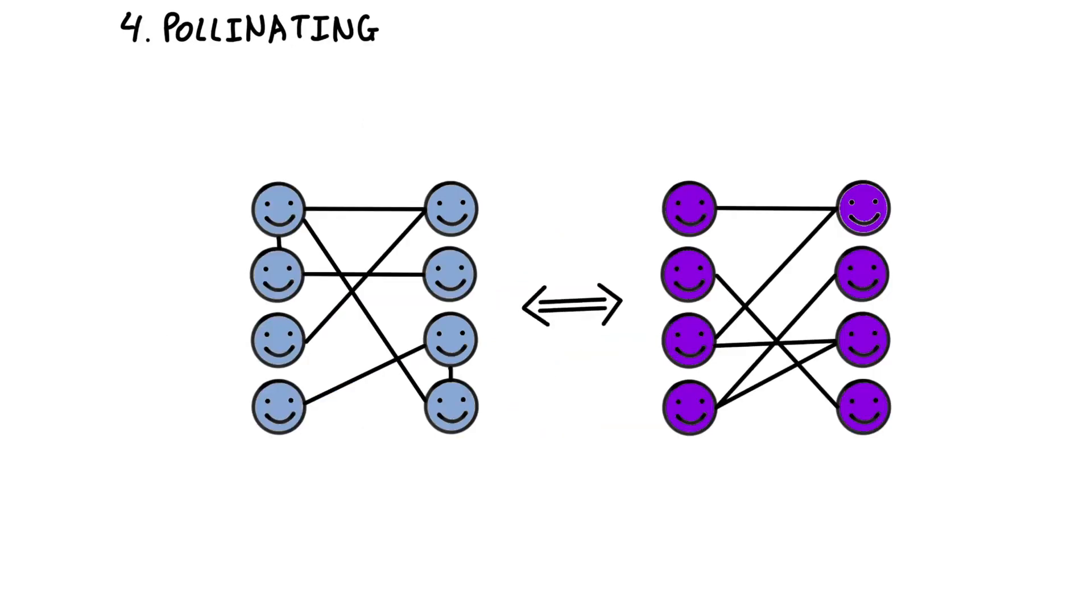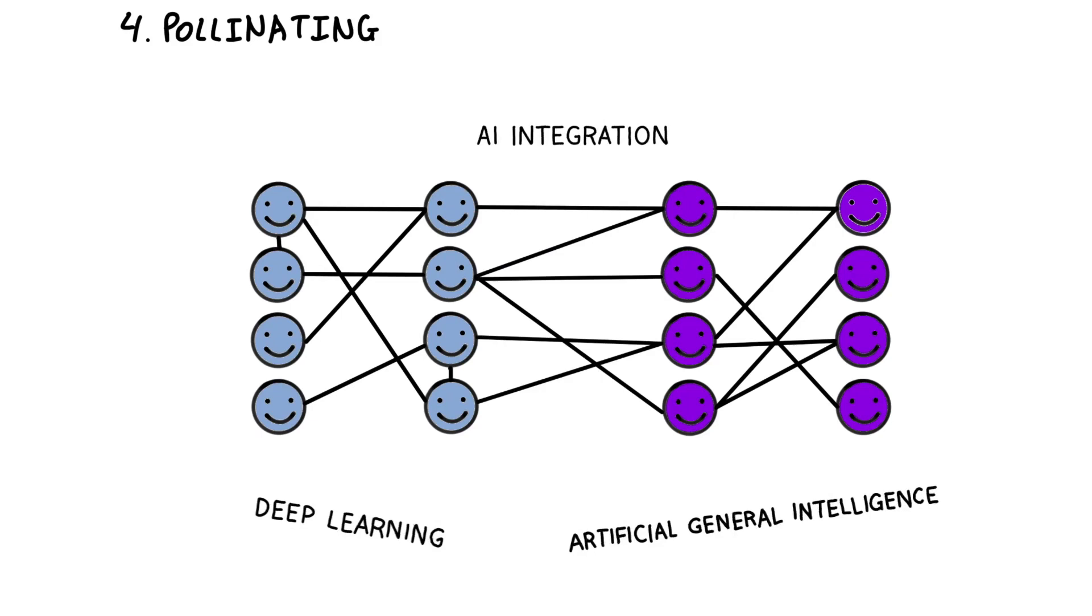Step 4 is pollination. AI integration happens through collaboration between multiple models or techniques. This leads to the development of more advanced AI systems, such as deep learning and artificial general intelligence.